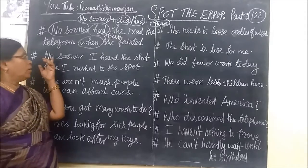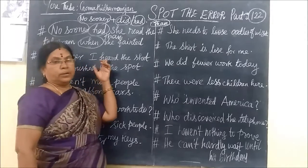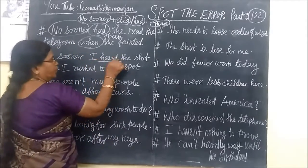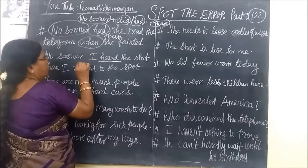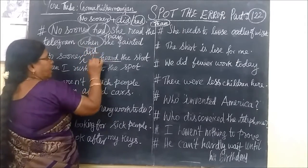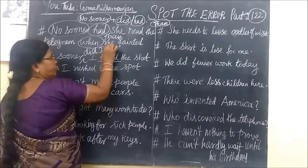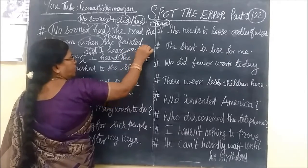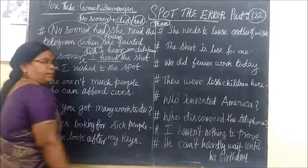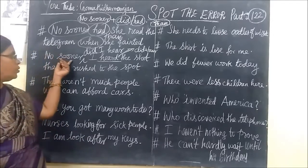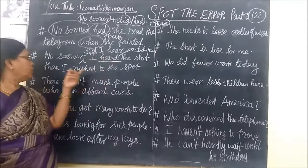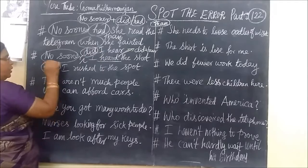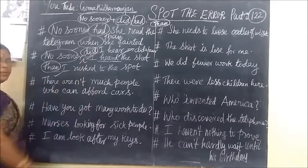See the second example: 'No sooner I heard' — the correction is 'No sooner did I hear the shout, than...' Here 'did' comes, not 'when.' And a third example follows. So no sooner + did/had, then 'than.' According to this structure, there are three parts coming: no sooner, did/had, and than.